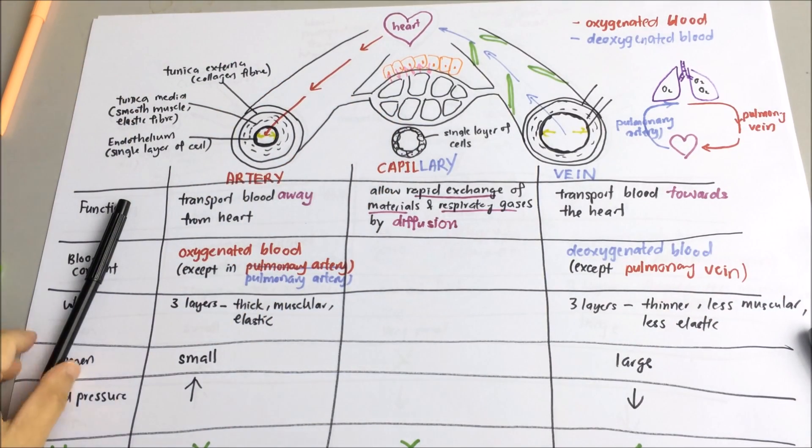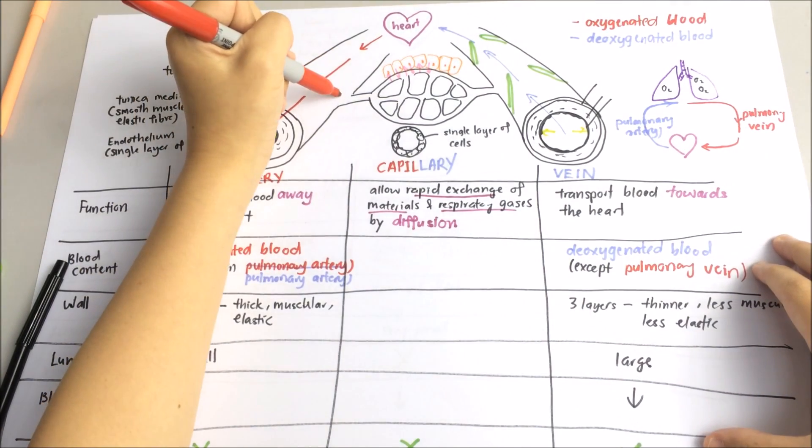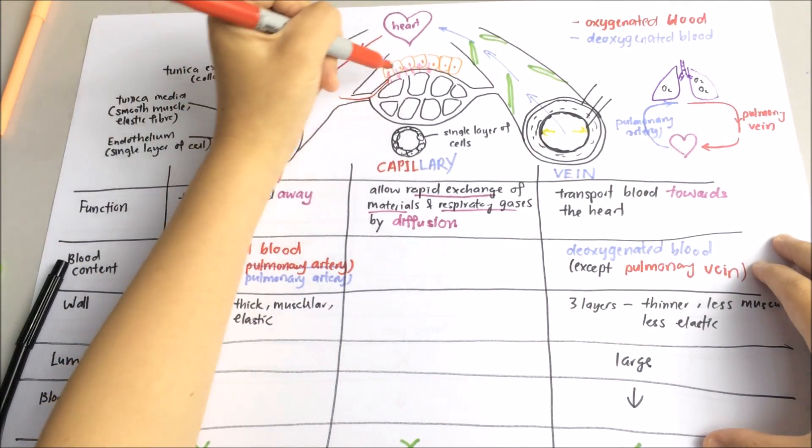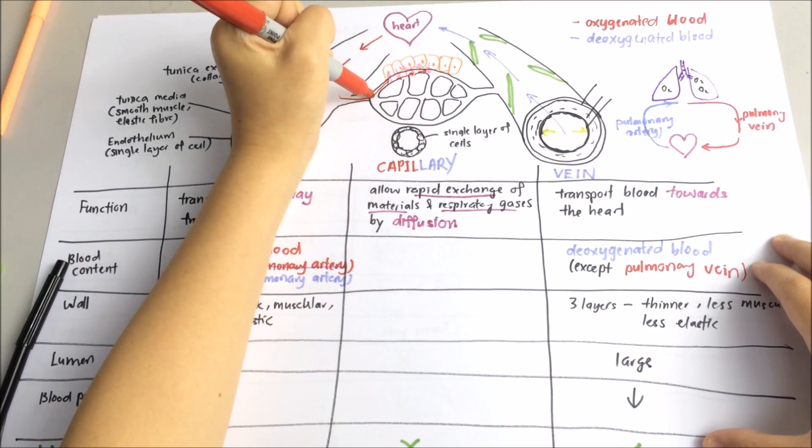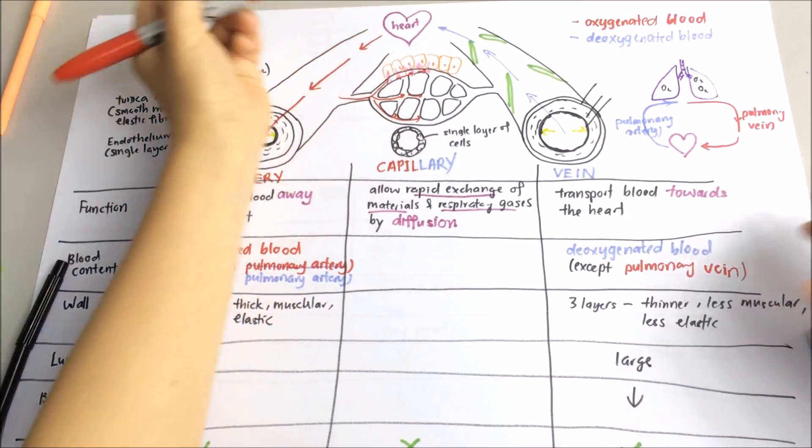At the junction between the artery and capillary, there are tiny branches of vessels known as arterioles. They carry oxygenated blood to the capillary.